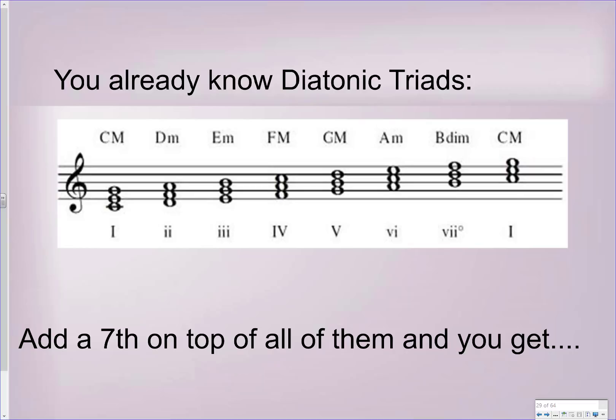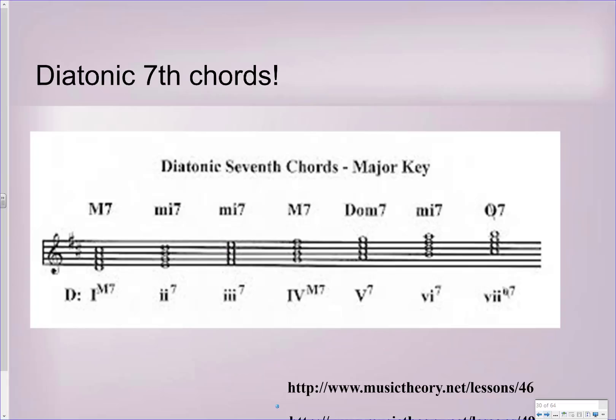If we add a 7th on top of all of them, you will get the diatonic 7th chords in a major key. Our major key is D major. Our 1 chord in D major is a major 7 — we have D, F-sharp, A, C-sharp — a major triad and a major 7th, making it a major 7th chord.